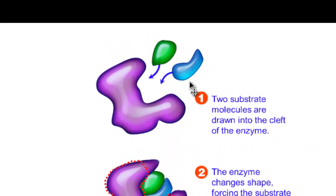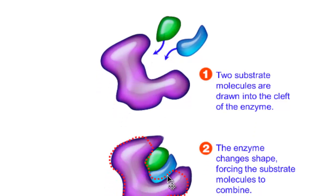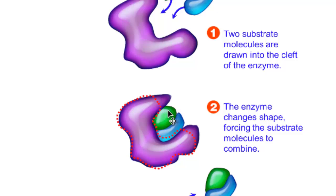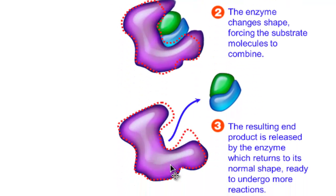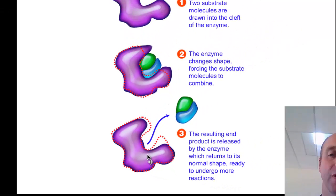Here's another example showing the two substrates dropping into the active site of the enzyme, making the enzyme-substrate complex. The enzyme is going to change its shape slightly to help them join together and align those bonds. When it releases, the enzyme goes back to its original shape and gets reused, as enzymes do, over and over again repeating that similar reaction.